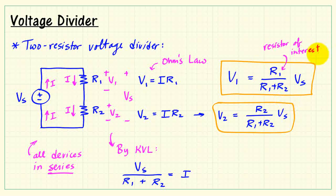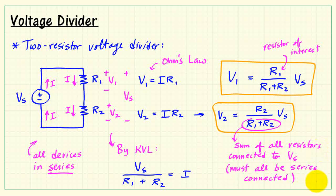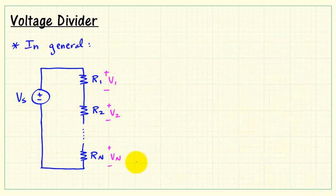So basically, if we're looking for the voltage across a particular resistance, we just use that resistor value. So we use R1 in conjunction with V1, R2 in conjunction with V2. Notice the denominator is always the sum of all the resistances connected to VS. And again, that means they must all be connected in series.